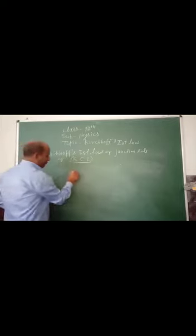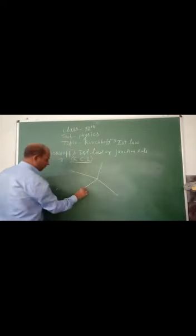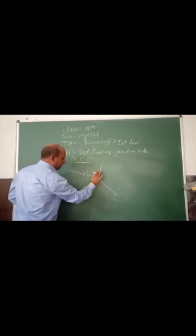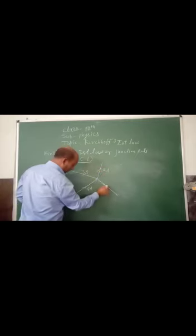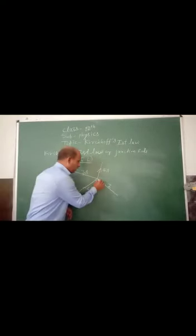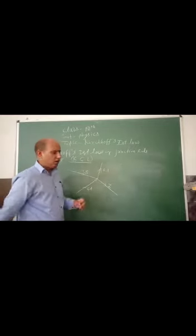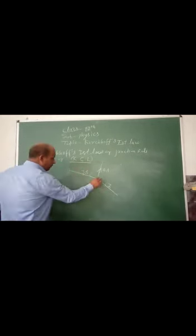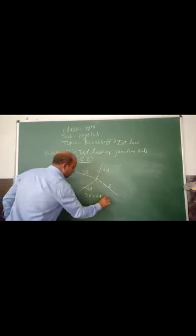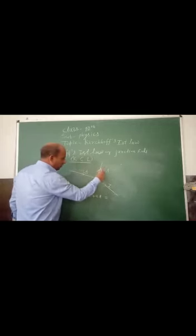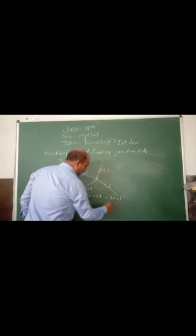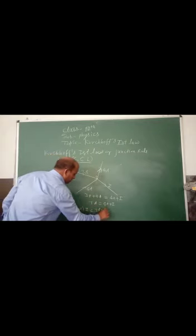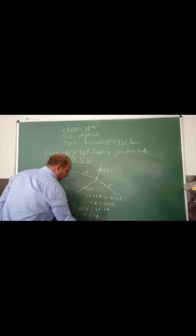Suppose we have a junction where 4 ampere current and 3 ampere current are entering, and 4 ampere current is leaving. We have to find out how much current is flowing in the remaining wire. Applying Kirchhoff's First Law, current entering equals current leaving: 3A plus 4A must equal 4A plus I. So 7A equals 4A plus I, therefore I equals 7A minus 4A, which gives I equal to 3 amperes.